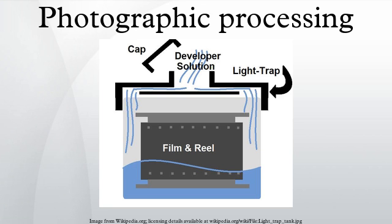Processing apparatus: Before processing, the film must be removed from the camera and from its cassette, spool or holder in a light proof room or container.